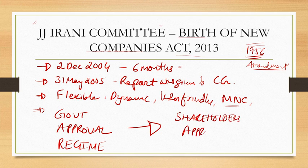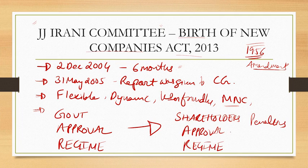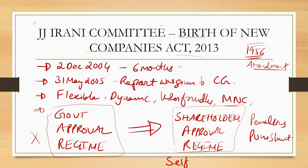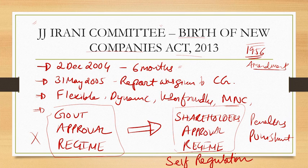Under the shareholder approval regime, penalties for illegal or fraudulent acts are very high. The government is saying: we will allow self-regulation — like Gandhiji's concept of Swaraj — but if something illegal or fraudulent is done, the punishment in Companies Act 2013 will be very severe. This shift from government approval to shareholder approval with high penalties was the main outcome of the JJ Irani Committee report.